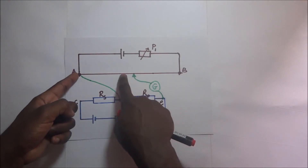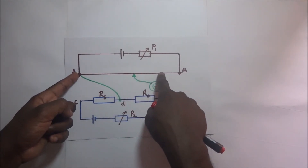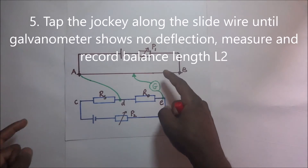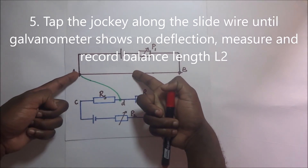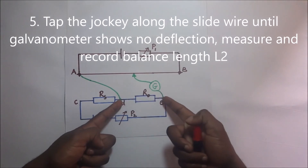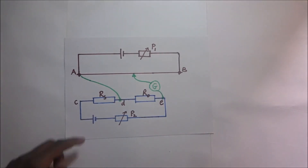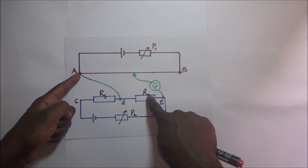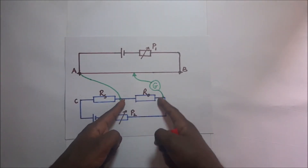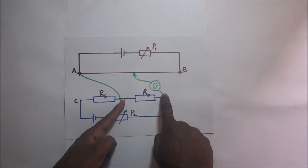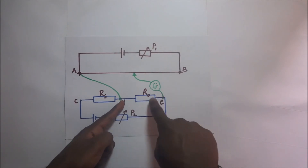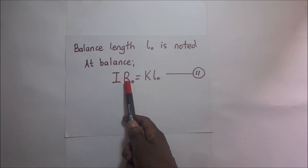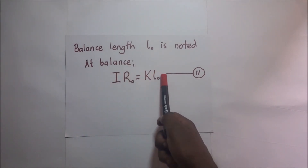We move the jockey along the wire and tap it at different positions until the galvanometer shows no deflection. At that balance point, the potential difference across the balance length — k times L₀ — equals the PD across R₀, which is I times R₀. So our second expression is: k·L₀ = I·R₀.